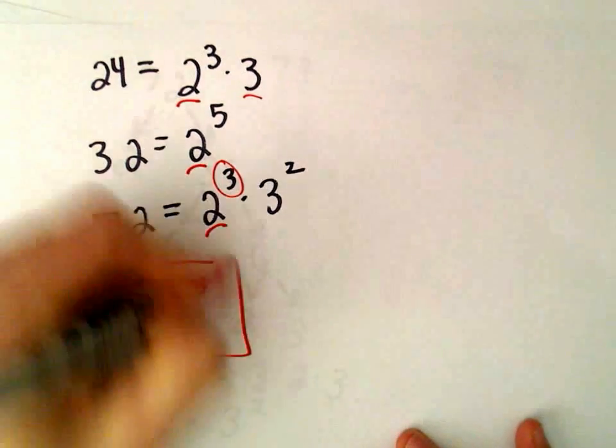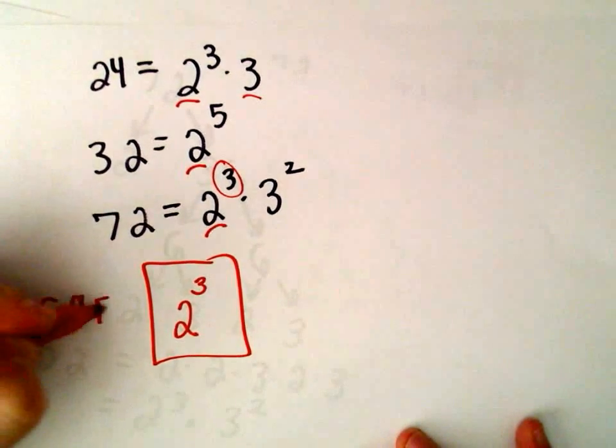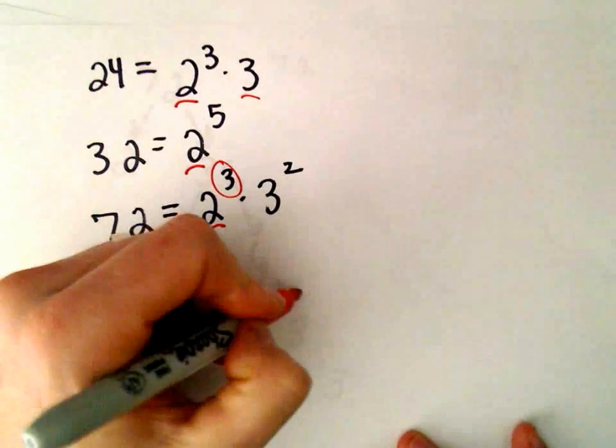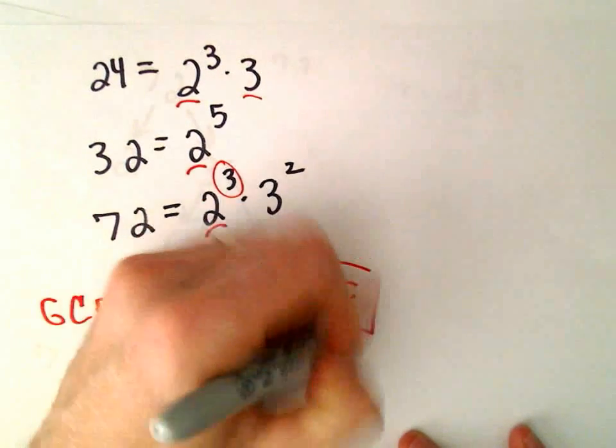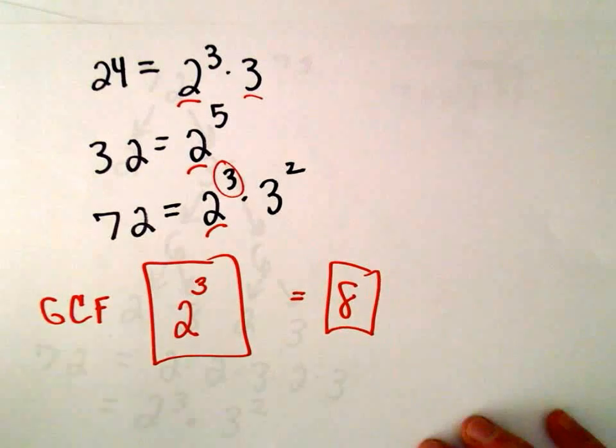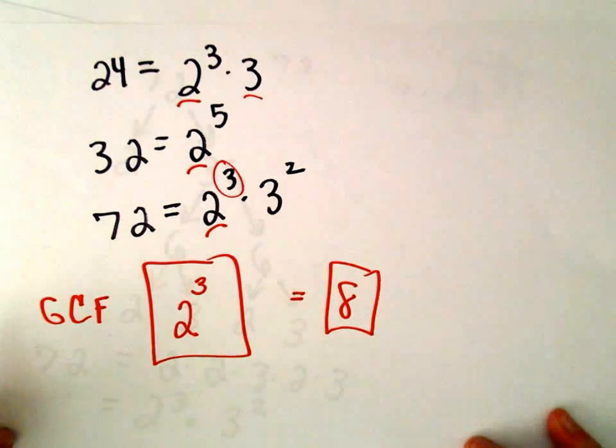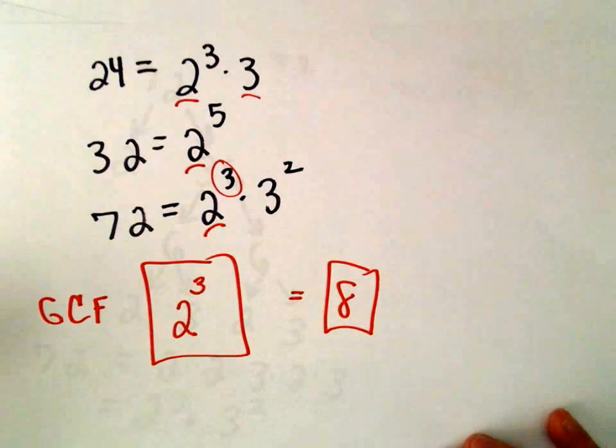The only thing we can factor out is 2 to the third, and this is our greatest common factor. 2 to the third is 2 times 2 times 2, which gives us 8. So the largest whole number that will divide into 24, 32, and 72 is 8.